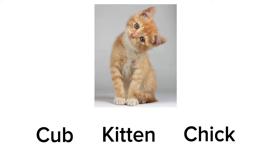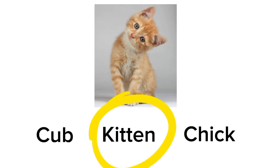Now next is baby cat. What is its name? There are three options again. One is Cub, the other is Kitten, and the third is Jet. Can you tell me the correct answer? What is baby cat's name? Its name is Kitten! Yay! Excellent!